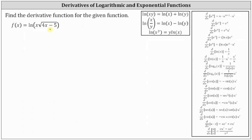We'll begin by applying the product property of logarithms, which states that the natural log of x times y equals natural log x plus natural log y. Because we have natural log of x times the square root of the quantity four x minus five, we can write f of x equals natural log x plus natural log of the square root of the quantity four x minus five.